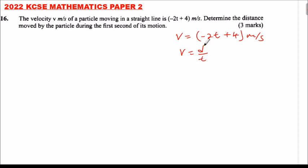So for us to get displacement, we need to integrate v. Distance is equal to the integral of (-2t + 4) with respect to dt from 0 to 1, because we are looking at the displacement after one second.